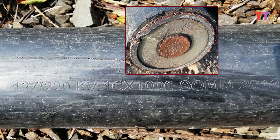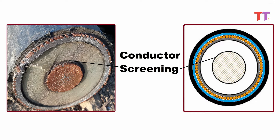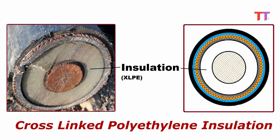Now, let's see the cross-section of the same cable. We can see the core of the cable — that is stranded copper conductors — with a collective cross-section area of 1,000 square millimeters, as mentioned on the cable. Conductor screening covers these stranded conductors. After that, there is a thick layer of insulation: XLPE, that is cross-linked polyethylene insulation.